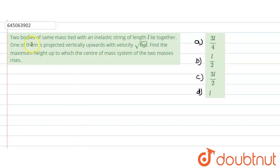Hello everyone. Let us start with our question. In this question, what is given: two bodies of same mass tied with an inelastic string of length l lie together. Now one of them is projected vertically upward with a velocity of √(6gl). We need to find the maximum height up to which the center of mass of the two masses would rise.